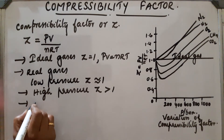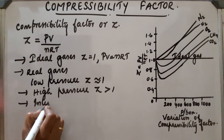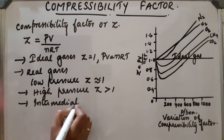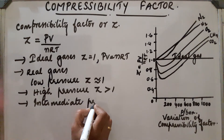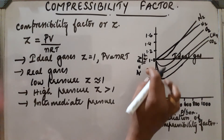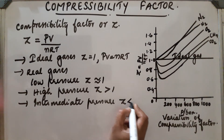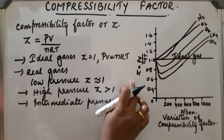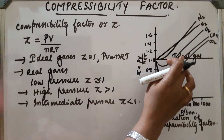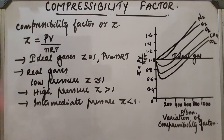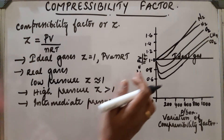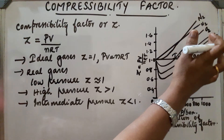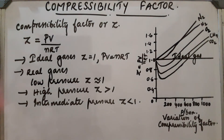For intermediate pressure, the Z value is less than 1. Gases show ideal behavior when Z is equal to 1, and almost all real gases show deviation from ideal behavior. The different plots of nitrogen, hydrogen, oxygen, CH₄, and CO₂ are given.